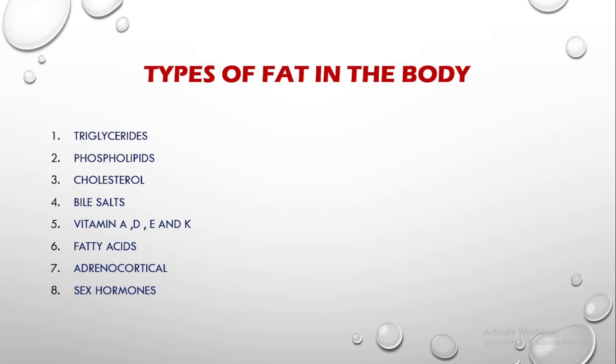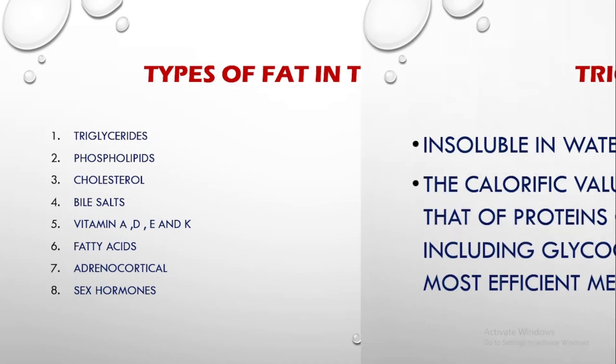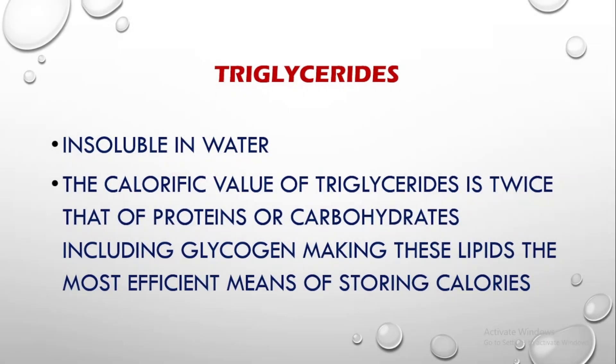What kind of fat is there in the body? There are a few important names you should understand. They are triglycerides, phospholipids, cholesterol, bile salts, vitamin A, D, E and K — which as you know are all fat-soluble vitamins — fatty acids, and adrenocortical and sex hormones.